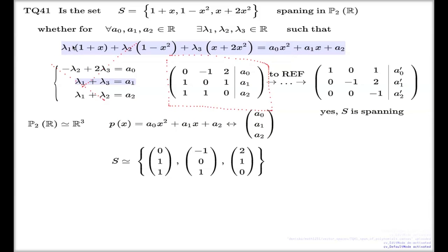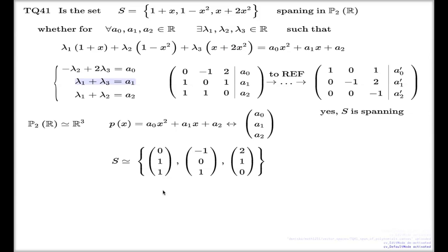This avoids the intermediate steps, because as we discovered on the previous slide, to answer whether a set is spanning you take the matrix with those vectors as columns and check whether the system is solvable all the time — whether you have all pivots on the left-hand side. That would be another acceptable way to argue question 41.